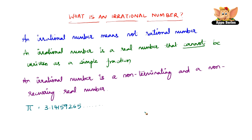Pi cannot simply be written as a simple ratio. We cannot write any two numbers that can represent pi, because pi just doesn't stop. It does not terminate — it is non-terminating. Therefore, these kinds of numbers are called irrational numbers.